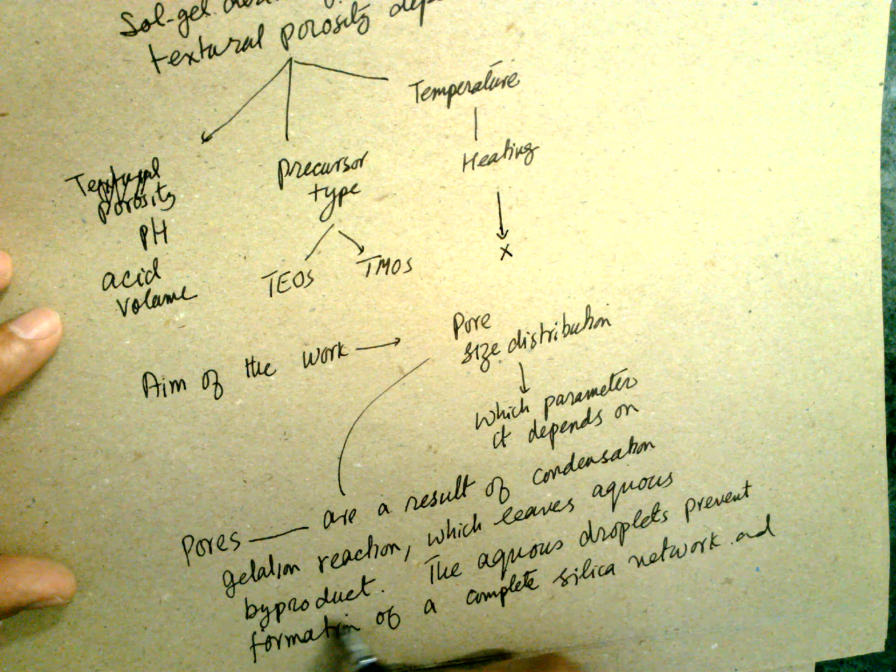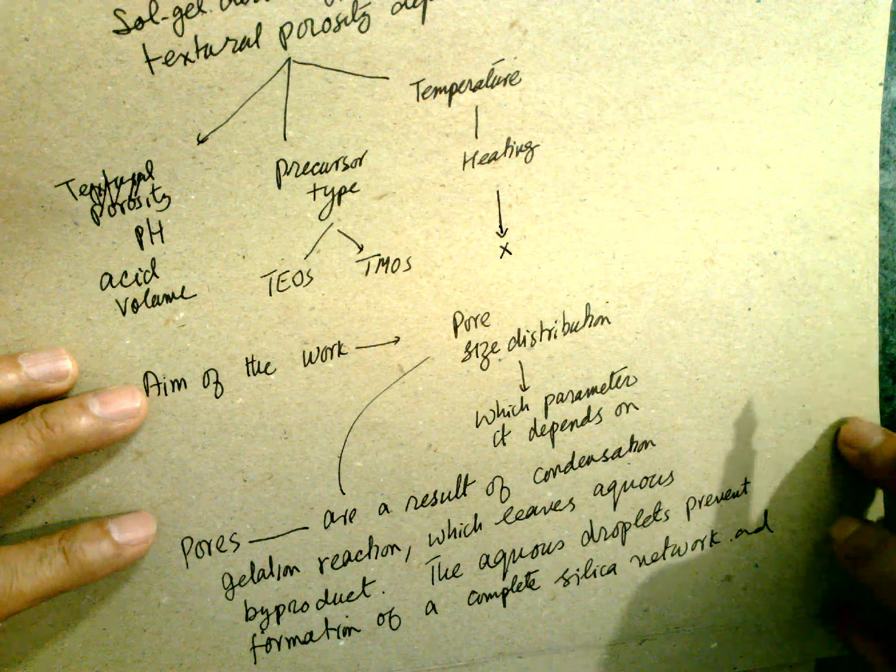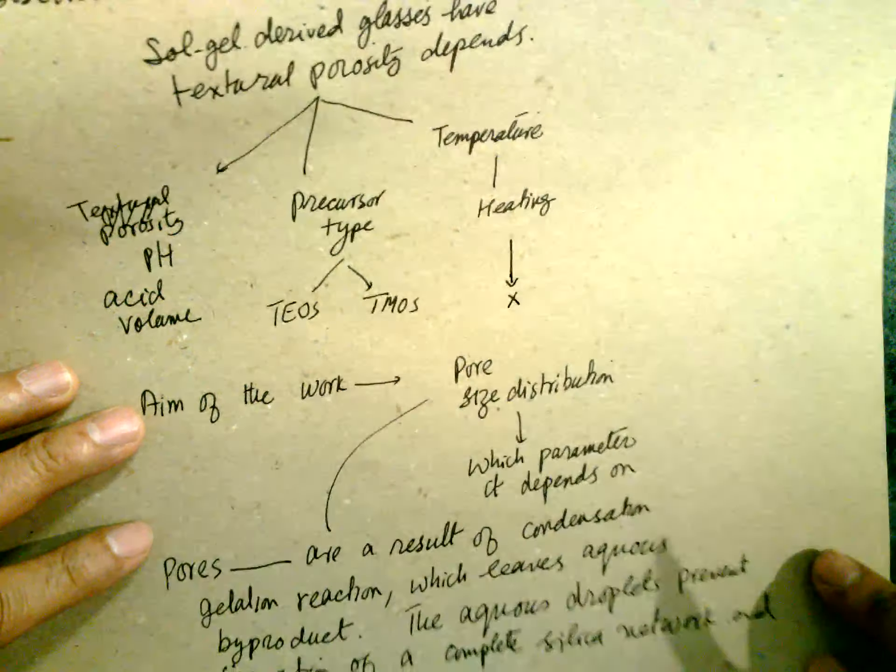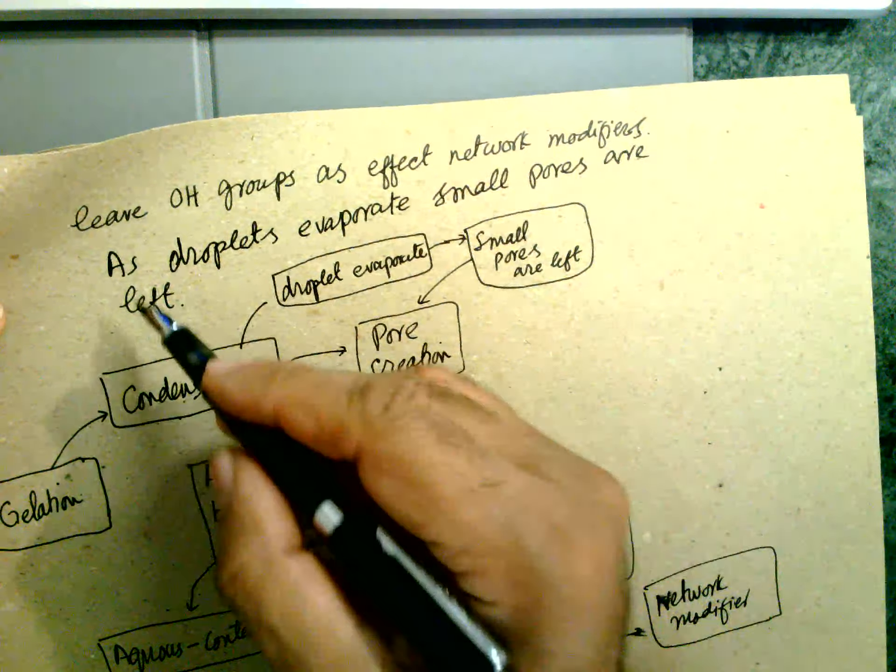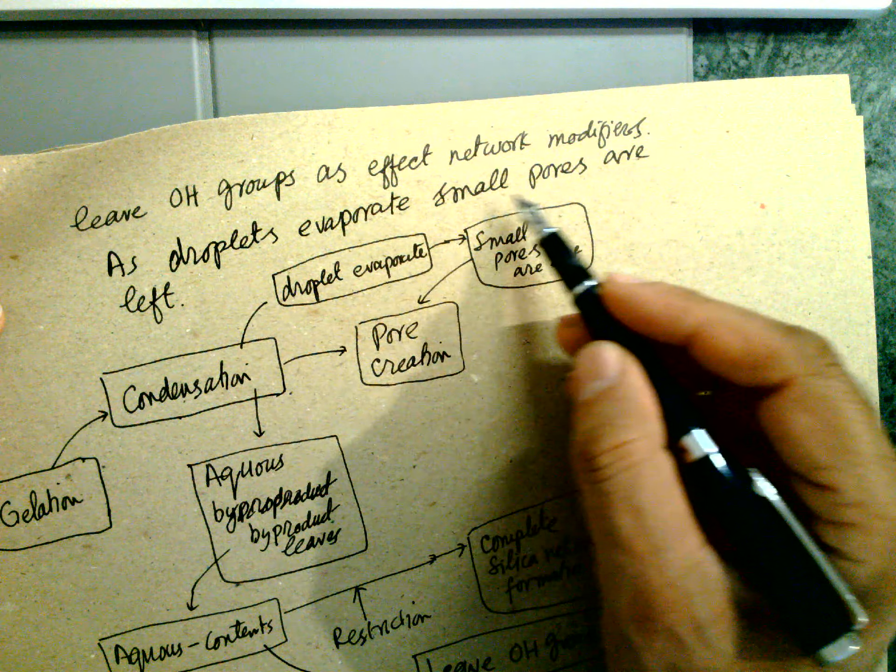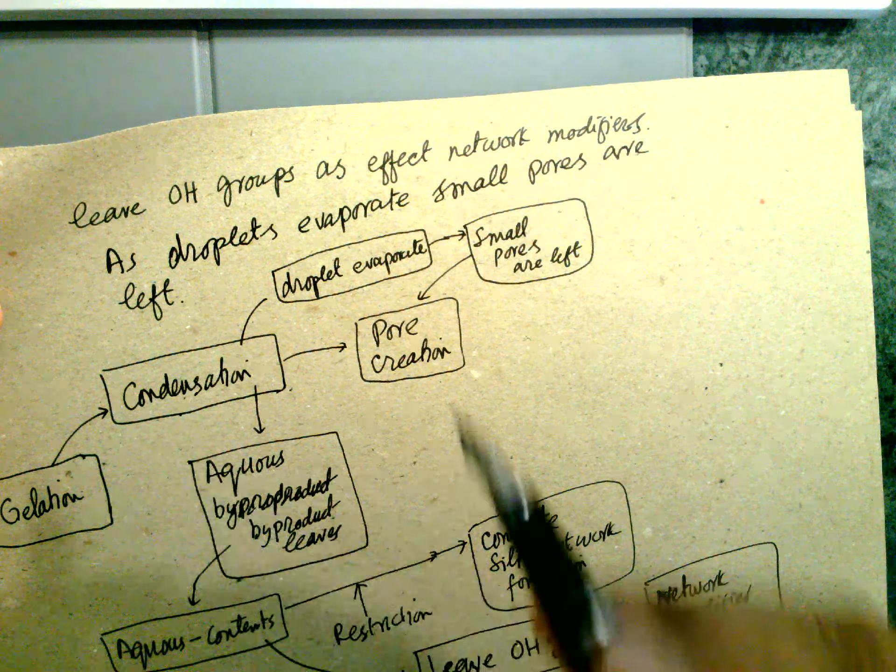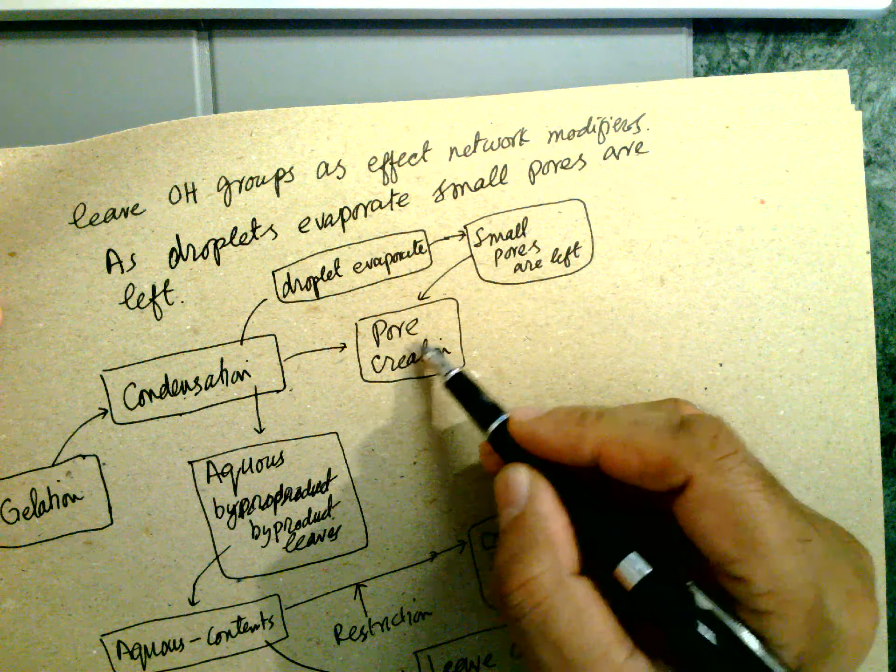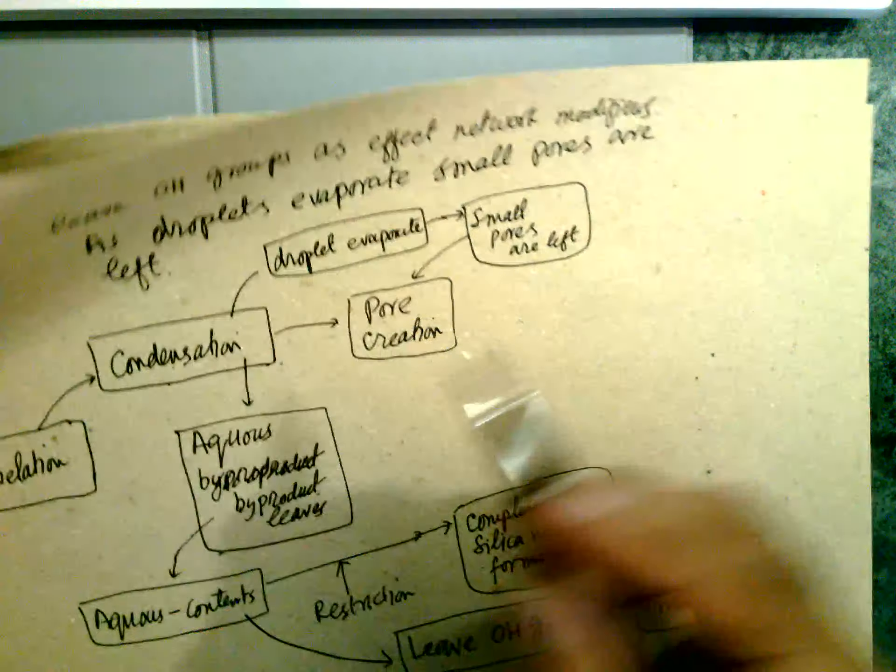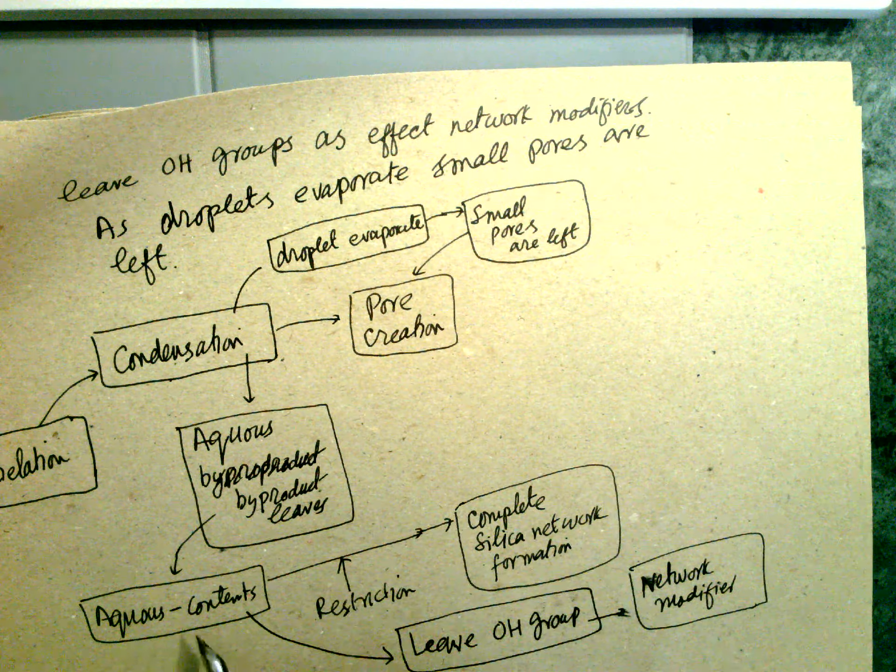Pores are a result of the condensation gelling reaction which leaves aqueous by-products. The aqueous droplet prevents formation of a completely silica network and leaves OH groups as effect of network modifier. As a droplet evaporates, small pores are left. Gelation happens, then condensation, and then the droplet evaporates, and then pore creation. Small pores are left.